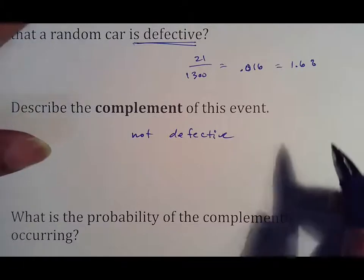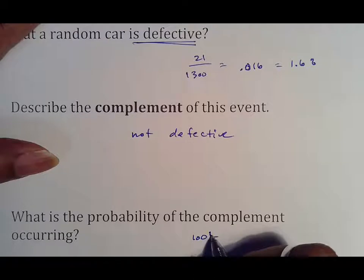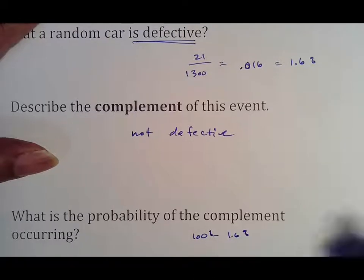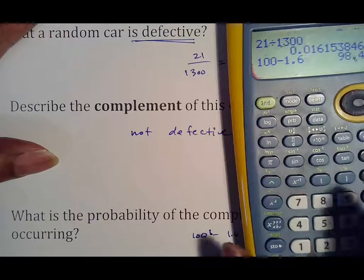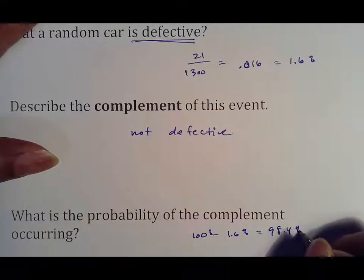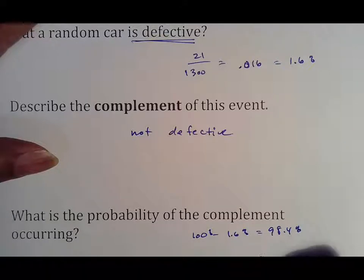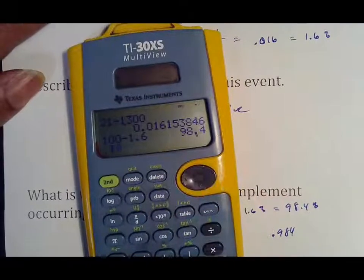So what's the probability that the complement occurs? Well, here's the thing. If complements are exact opposites and percentages add up to 100, you would simply take 100 percent minus 1.6 percent, which is 98.4, or as you would say, 0.984. But again, check this out. If I take 0.016 plus 0.984, I get 1.